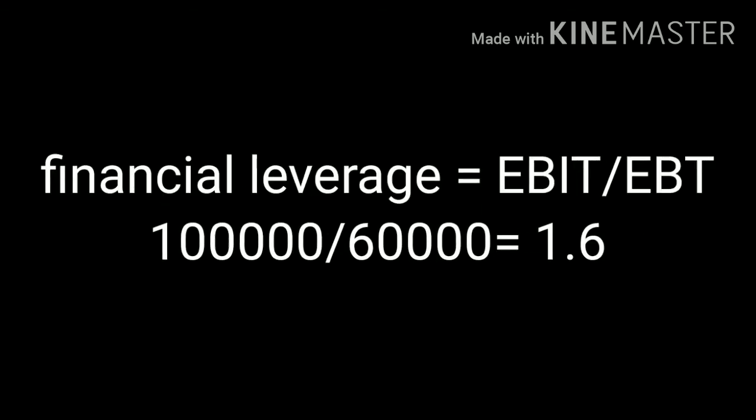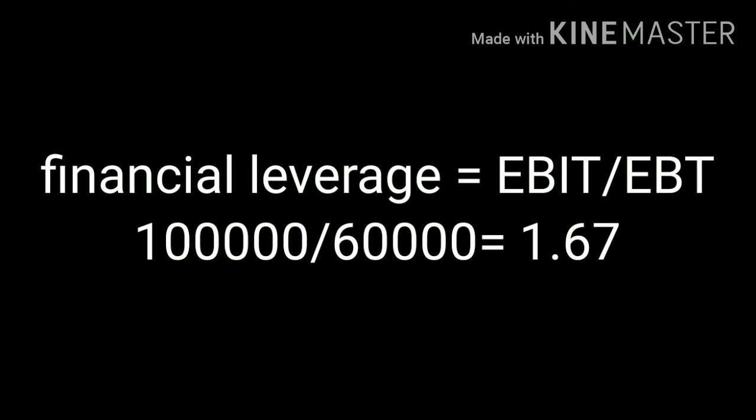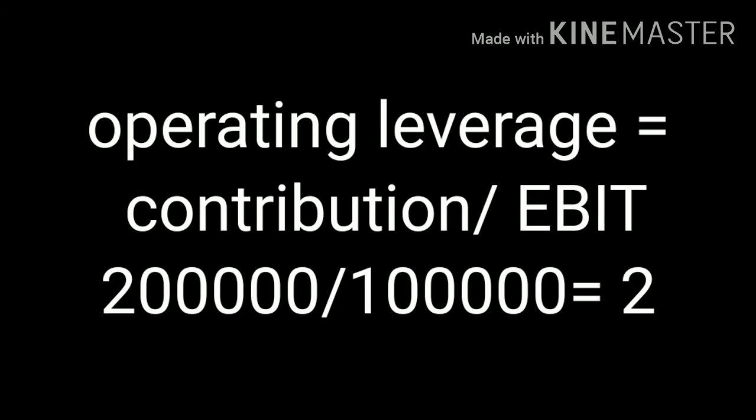Financial leverage is equal to EBIT divided by EBT: 1 lakh divided by 60,000, that is 1.67. Operating leverage is equal to contribution divided by EBIT. Contribution is sales minus variable cost: 5 lakh minus 3 lakh equals 2 lakh. EBIT is 1 lakh. So 2 lakh divided by 1 lakh gives operating leverage of 2.